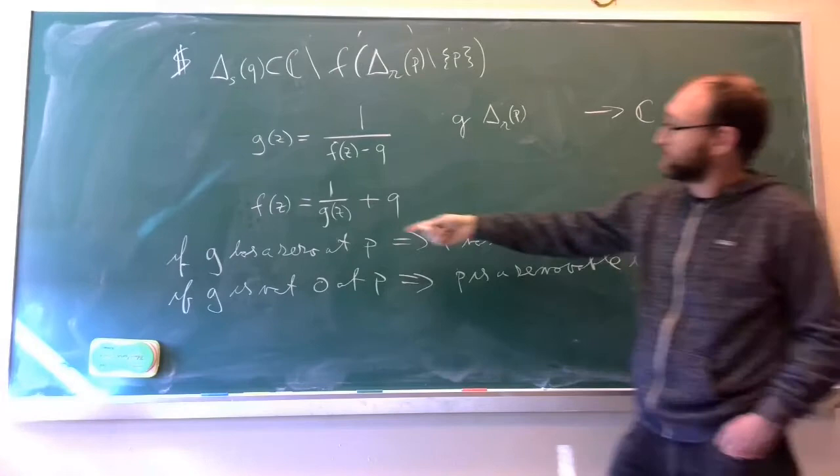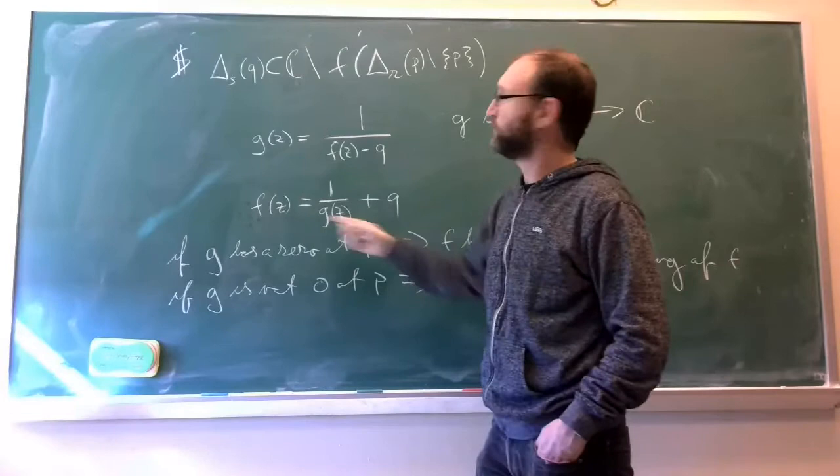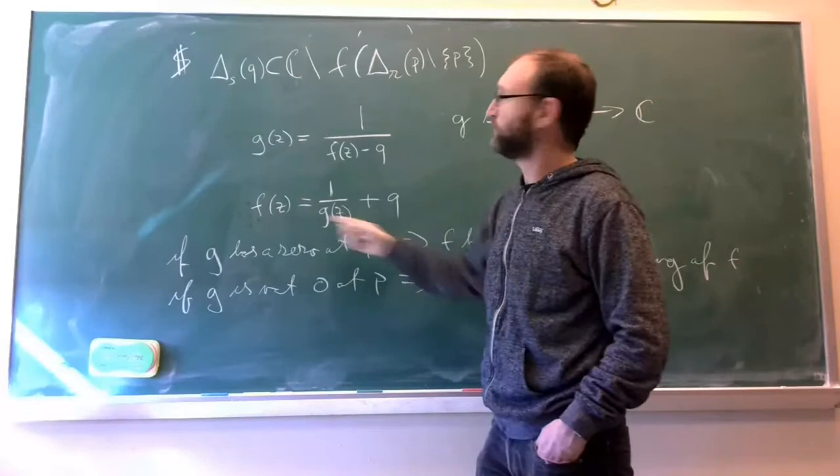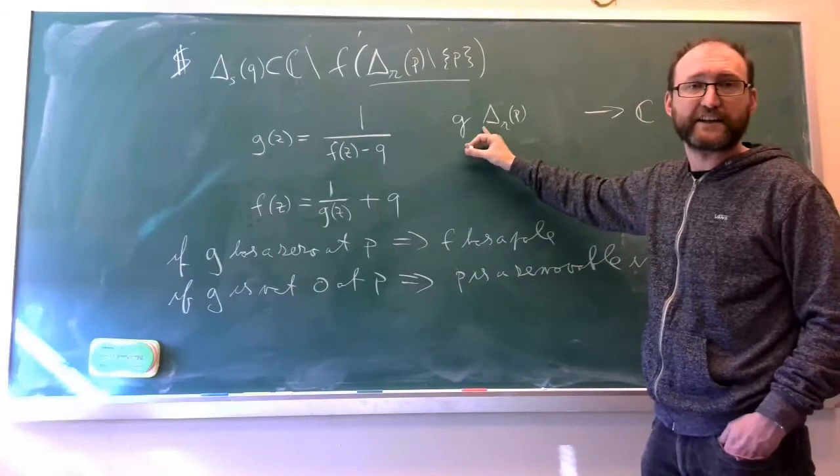Because then 1/g is just holomorphic. So then we have a holomorphic function in the neighborhood of p that equals f. I mean these two equations are on the punctured disk. But g extends through, you can think of g as a function that's holomorphic even at p. So that's the proof.